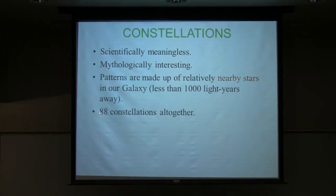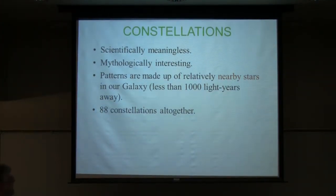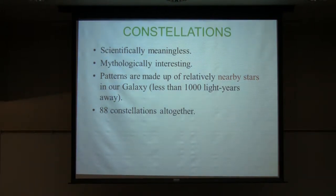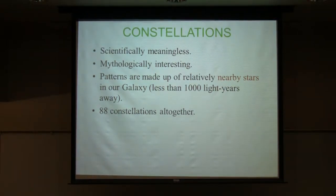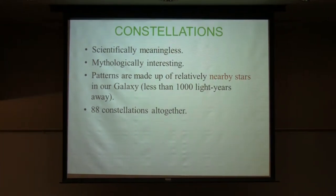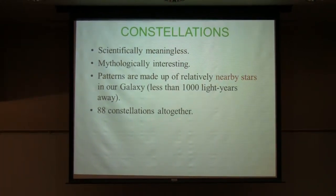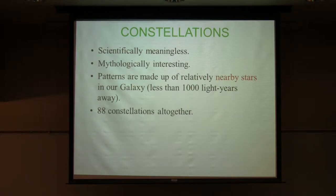There are 88 constellations altogether — same as the number of keys on a standard piano. You don't have to learn them all. Some you won't ever see from this latitude, and others aren't worth seeing — made up of maybe two or three dim stars just to fill in that area. Sort of like the viola section of the sky: they're important but they don't stand out.